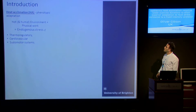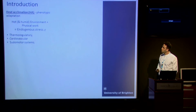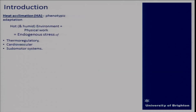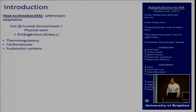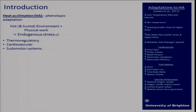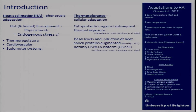We see heat acclimation described as a phenotypic adaptation. In its most simplified model, we combine hot and humid environments with physical work to endogenously stress primarily thermoregulatory, cardiovascular, and sudomotor systems. These adaptations, borrowed from Professor Sorka, have been discussed in detail earlier, and Professor Sorka also touched on acquired thermotolerance, which is a cellular adaptation offering protection against subsequent thermal exposures.